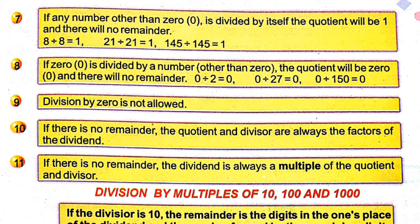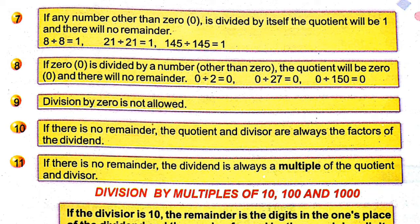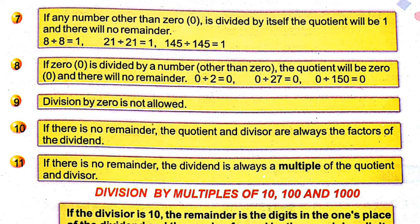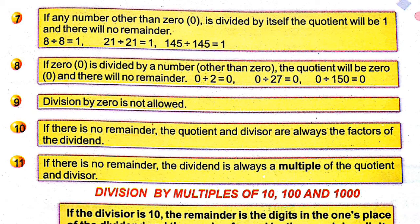Fact 7: if any number other than 0 is divided by itself, the quotient will be 1 and there will be no remainder. For example, 8 divided by 8 gives quotient 1 with no remainder. 21 divided by 21 gives quotient 1. 145 divided by 145 gives remainder 0 and quotient 1.